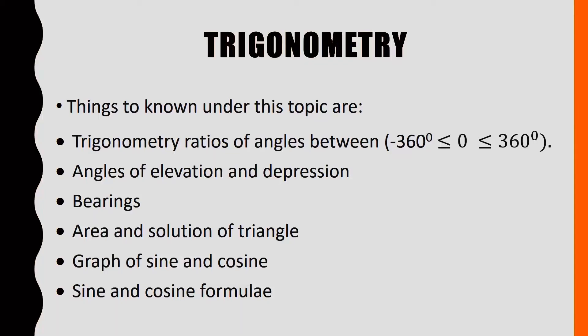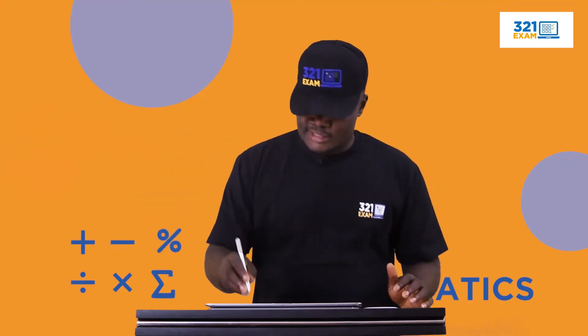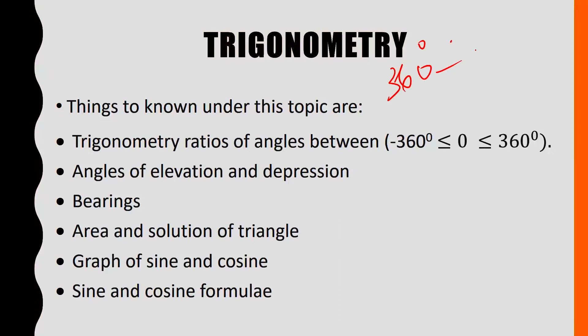The very first one: you should know the trigonometry ratio of an angle between positive 360 degrees to negative 360 degrees, which means 360° ≤ θ ≤ -360°, which will cover everything. Then number two, we should look at angles of elevation and depression. Bearings, that has to do with positioning with angle, everything will be centered around cardinal points that I will introduce you to subsequently.